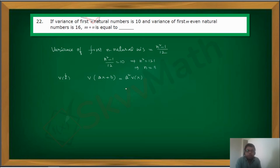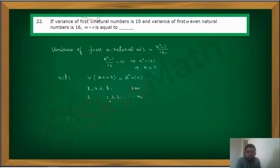The variance of the first m even natural numbers — the first m even natural numbers are: 2, 4, 6, 8, ..., up to 2m. If you take 2 common from each value, you get 1, 2, 3, ..., m. This is the set of first m natural numbers.